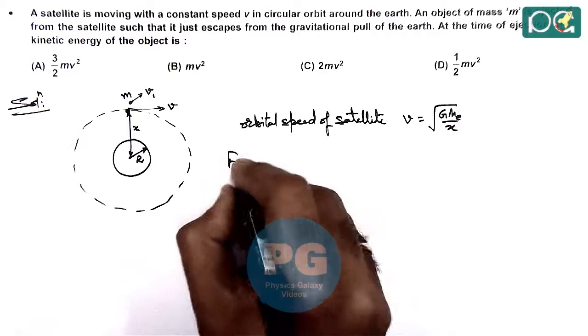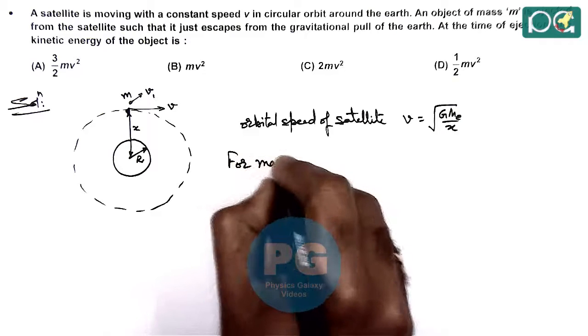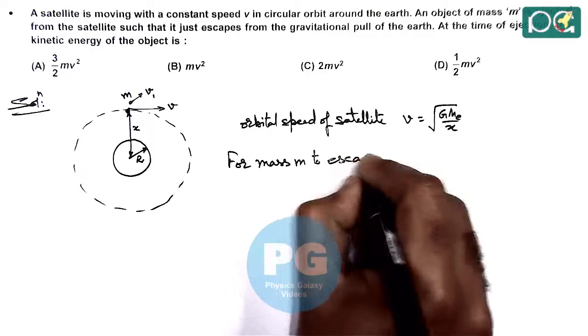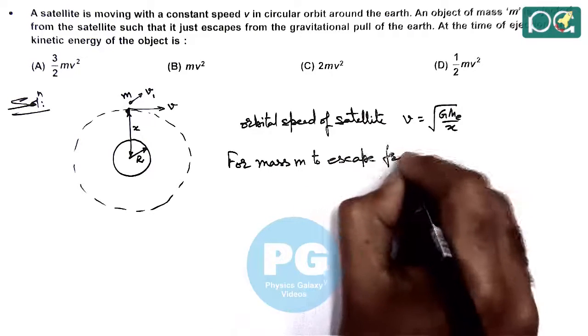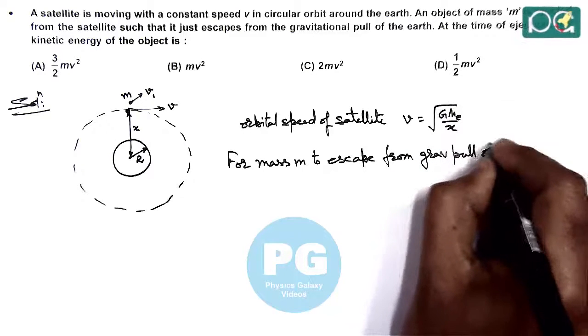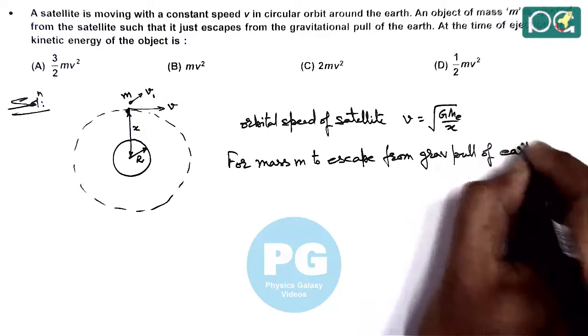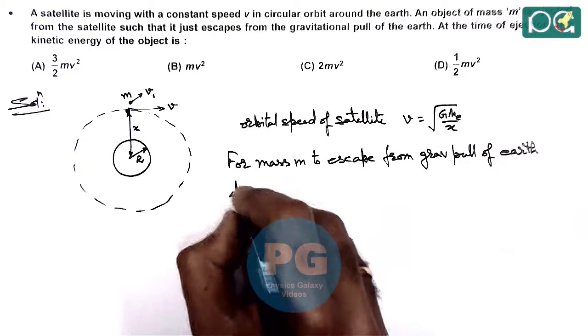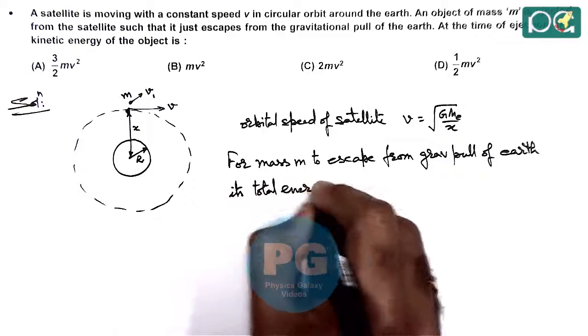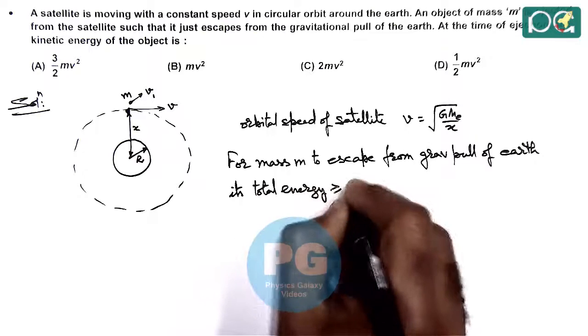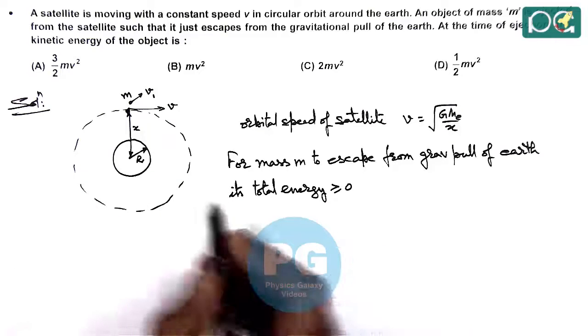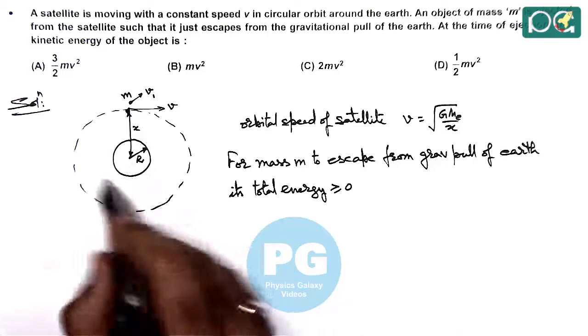For mass m to escape from the gravitational pull of Earth, its total energy should be greater than or equal to zero. If the total energy remains negative, that means it is still under the influence of gravitational pull.